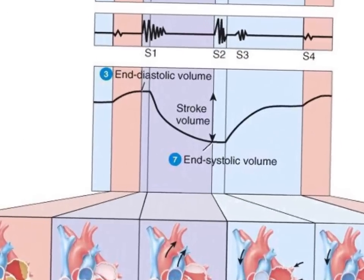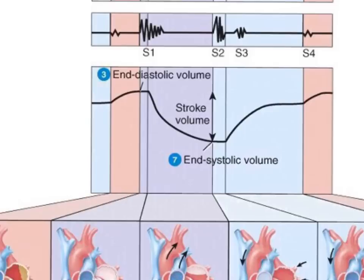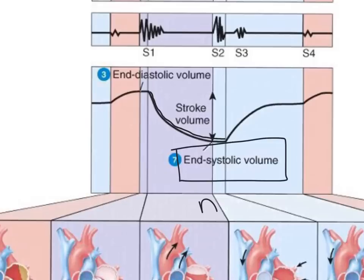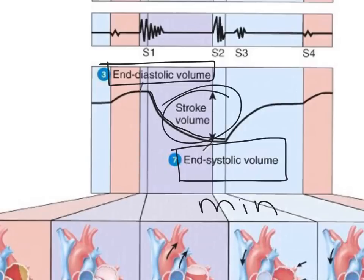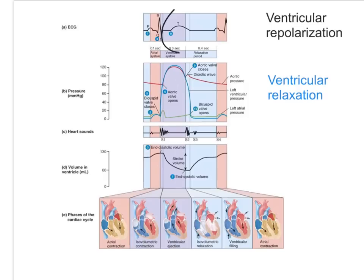The ventricular volume has been decreasing because blood has been ejected from the ventricle into the aorta, and now we have the minimum amount of blood that will be in the heart for any cardiac cycle — this is known as the end systolic volume. The difference between the end diastolic volume and the end systolic volume is called the stroke volume: the amount of blood being pumped out per cardiac cycle, per beat.